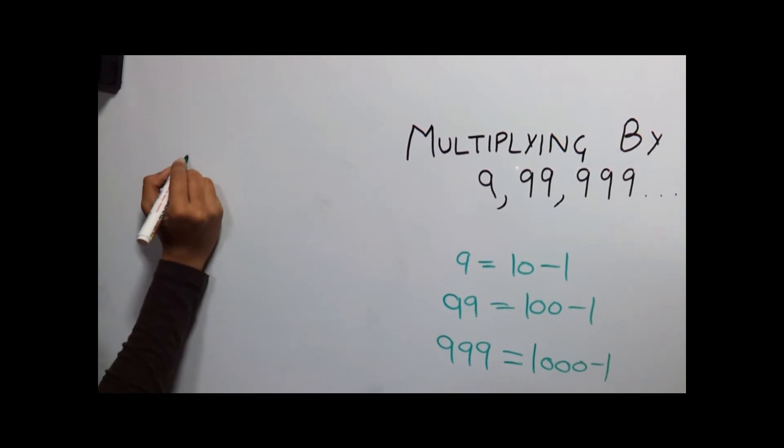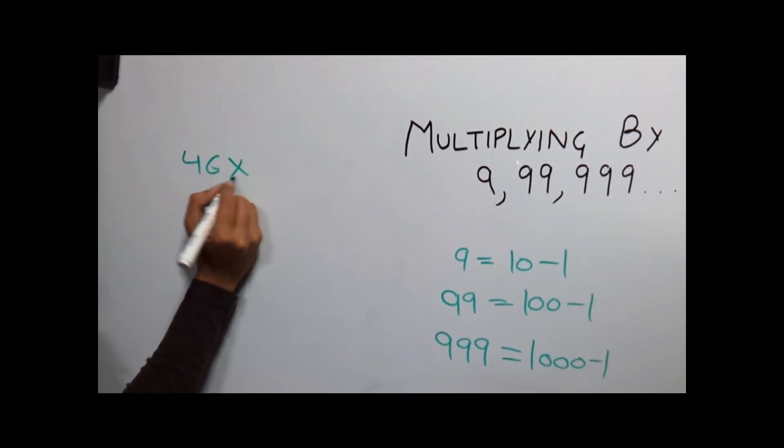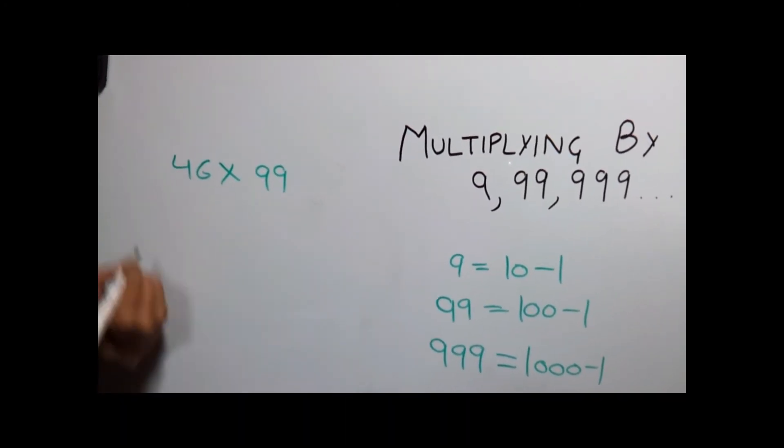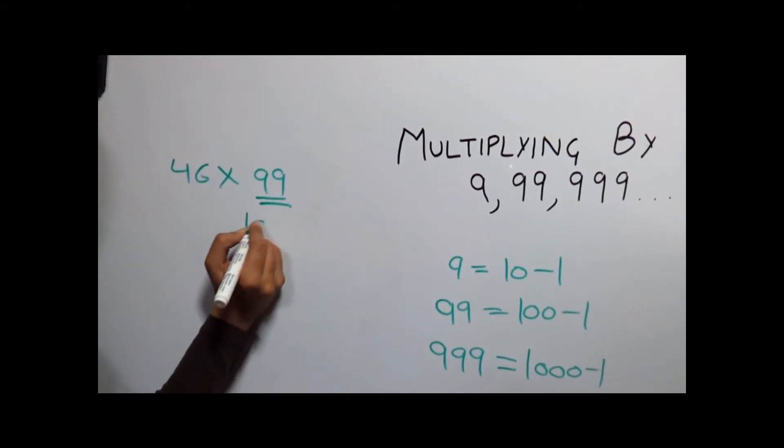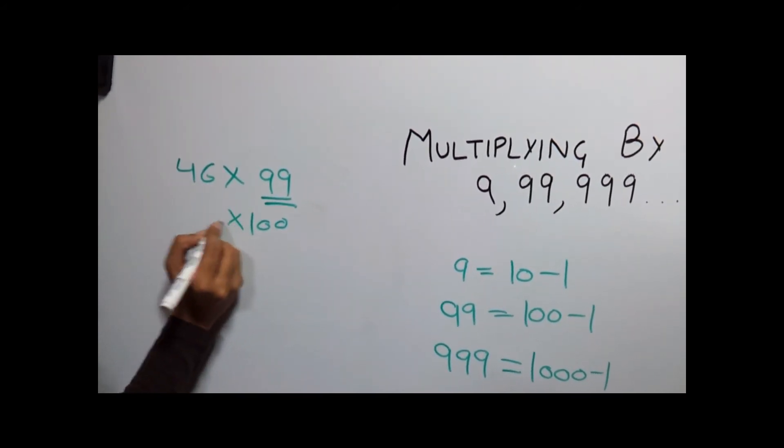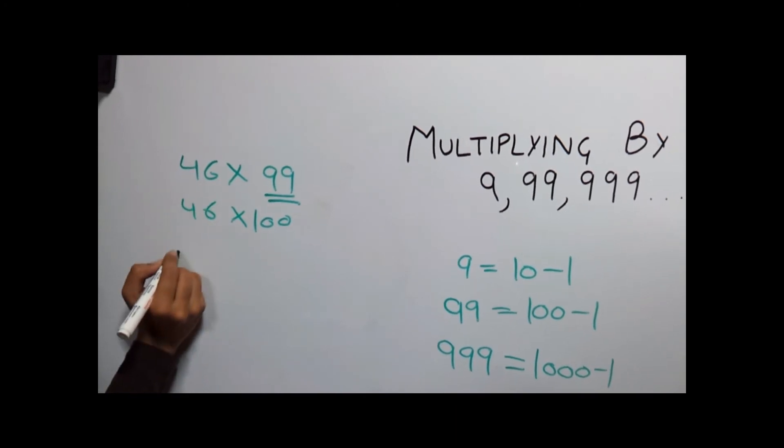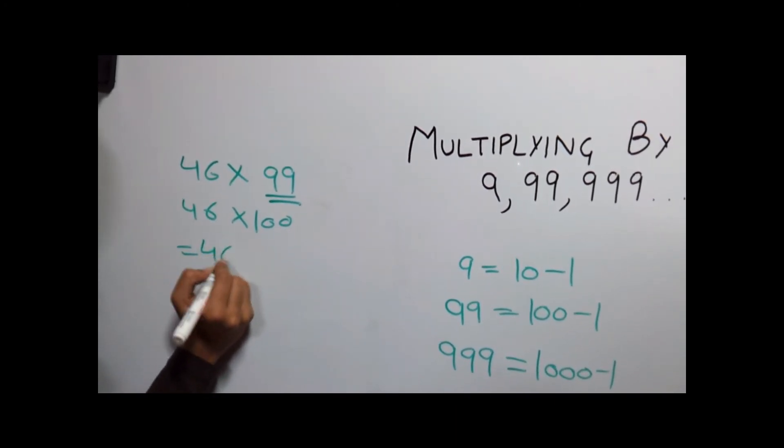Let's take 46 into 99. Now base value of 99 is 100. Multiplying this with 46 gives us 4600.